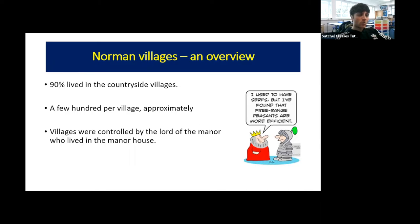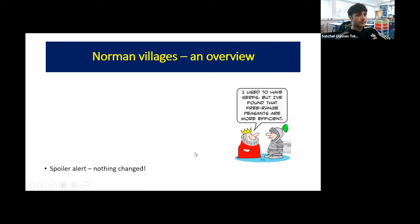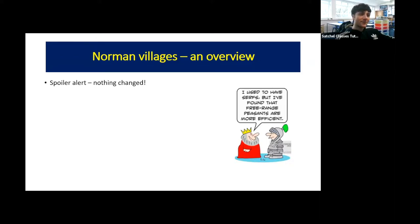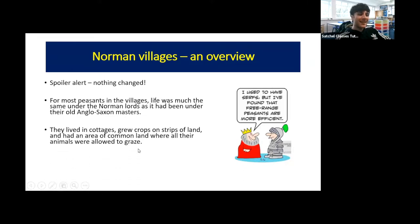The villages were controlled by the lord of the manor, who lived in the manor house. According to the Domesday Book in 1086, there were about 13,400 villages — a really dominant mode of life for peasants in the Norman era. However, nothing really changed for the lives of peasants relative to the Anglo-Saxon period. For most peasants, life was essentially pretty similar under Norman lords as it had been under Anglo-Saxon earls — a relationship of mastery versus daily farm work from the serfs.